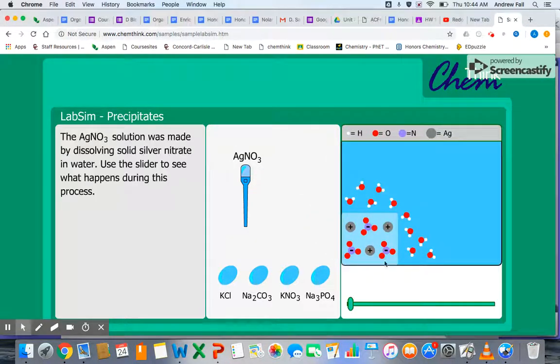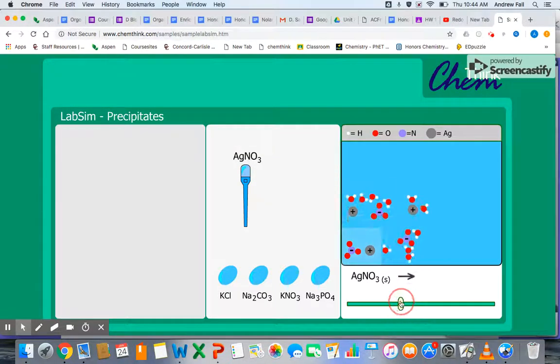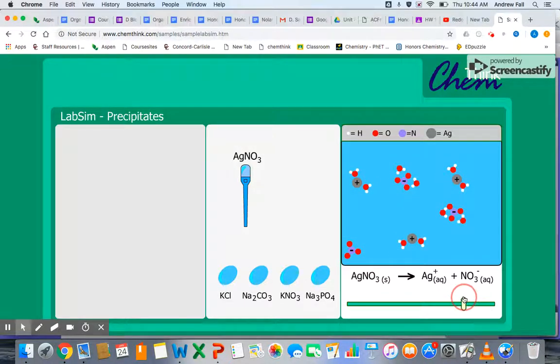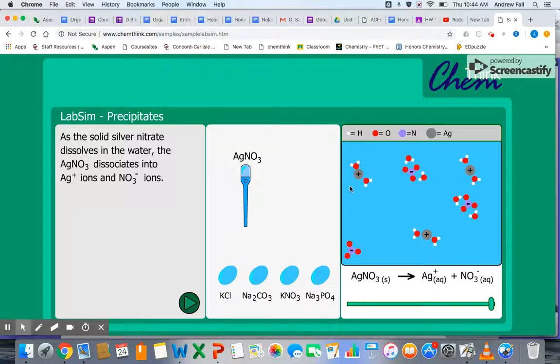When you're making a solution you typically add a solid ionic compound to a solvent, typically water in this case. And what happens is your ionic lattice that's initially present gets broken down as water molecules dissolve the component ions of the ionic compound. You can see that the cations are surrounded by the partially negative oxygen end of water and the anions are surrounded by the partially positive hydrogen end of water and therefore we have an aqueous solution.